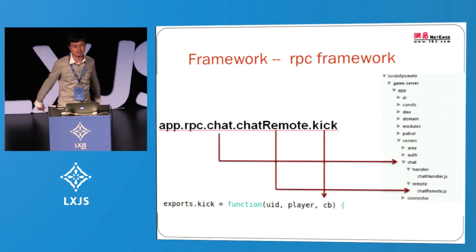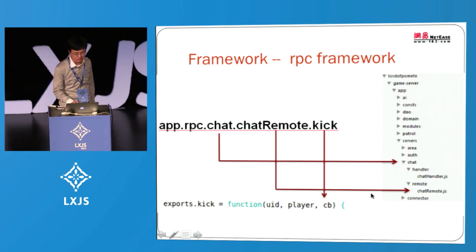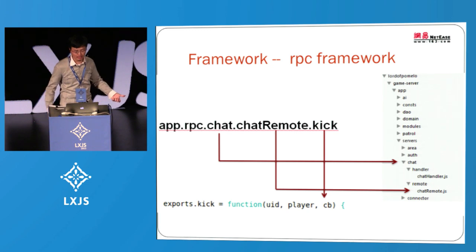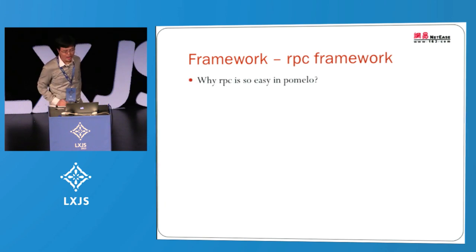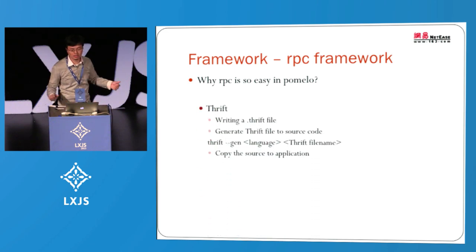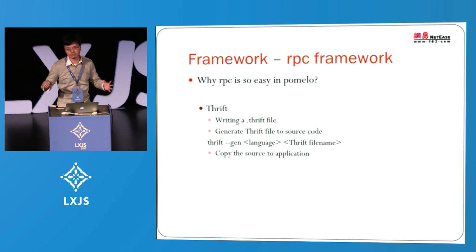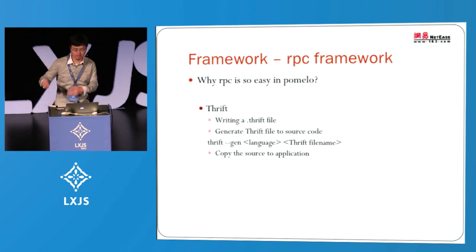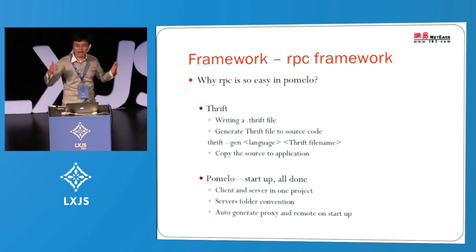Let's jump to the third part: RPC. It's so simple that I don't think I need much explanation. It's just app.rpc, and the other part is just like a client-side call. You just call it like a local method, and you're done. Usually in other RPC frameworks you need to set up IPs, connect to them, and in Thrift you need to write a Thrift file, generate source code from it, copy it to the application, and redo it every time the signature changes. But in Pomelo, you just start up — all done.